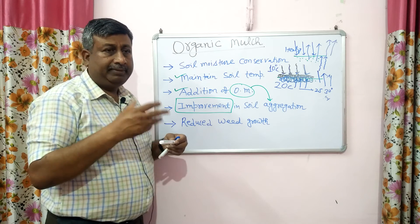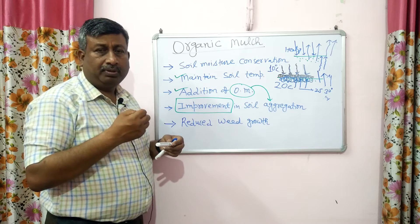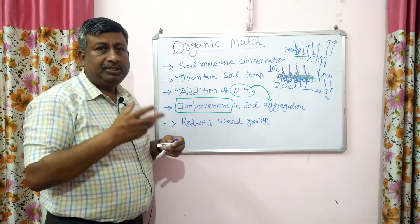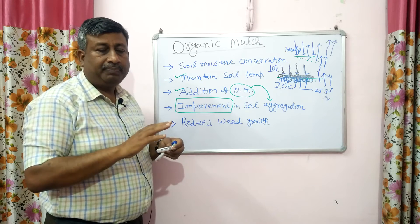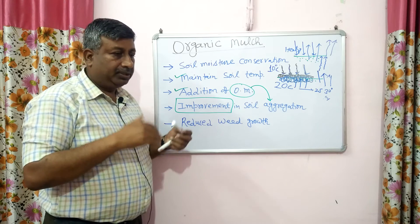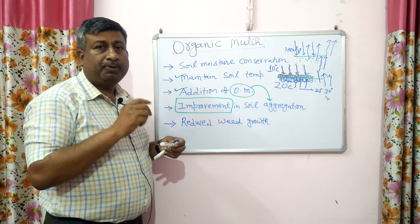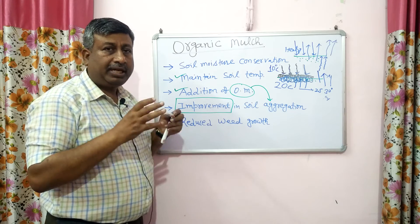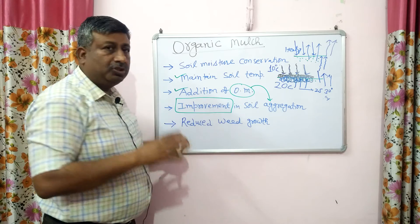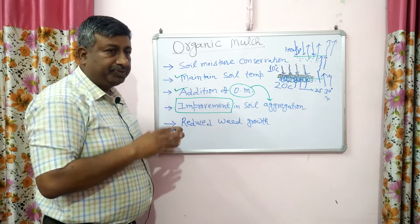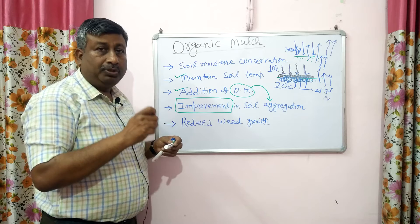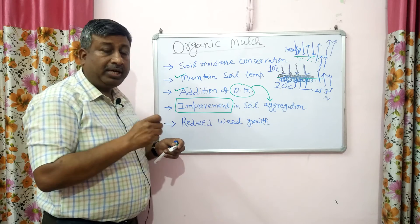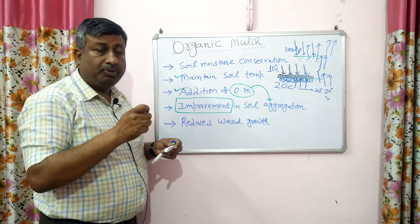In sandy soils, macropores are more so water holding capacity is poor — sandy soils cannot retain water. Aeration is very good but these soils cannot retain moisture. When we use organic mulch in sandy soil, it contributes organic matter so micro-porosity is increased and sandy soils can retain moisture for a longer period. So the impact of organic matter is improvement in soil aggregation — in clay soil, aggregation improves aeration; in sandy soil, aggregation improves water holding capacity.